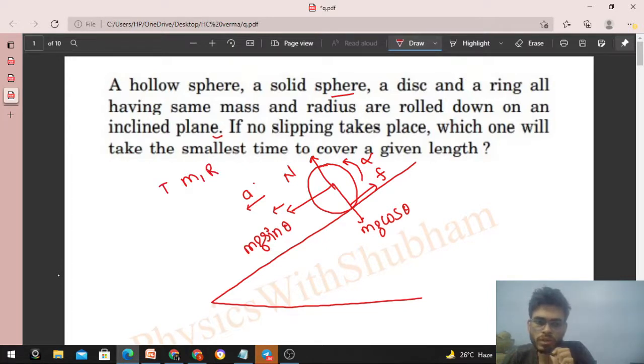We know mass and radius, and we can also find out the value of moment of inertia by mass and radius. Now, what we don't know is: acceleration we don't know, alpha we don't know, friction force value we don't know. So three variables we have, so three equations we have to write.